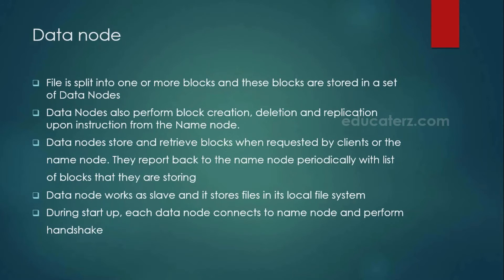We also saw in the architecture diagram that many data nodes are available. What is the purpose of data nodes? Whatever data is there, whatever file information is there — your file is divided into blocks, which are small chunks — all these blocks are going to be stored as part of your data nodes. Data nodes are responsible to hold all the block information, and the actual blocks are stored here. Data nodes are also responsible for block creations, block deletions, and block replications. They keep on receiving instructions from the name node, and the data node follows the instructions from the name node.